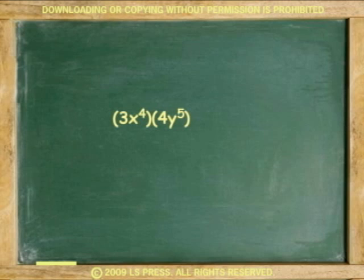For example, 3x to the fourth times 4y to the fifth. Multiply 3 and 4. You cannot add the exponents 4 and 5. Notice the x's and y's remain separate.